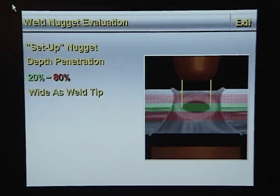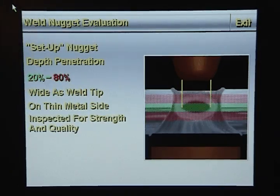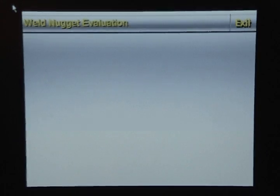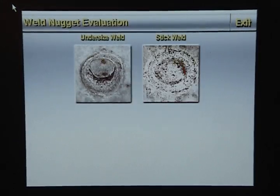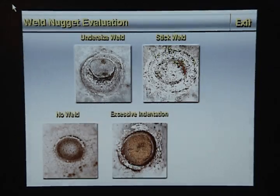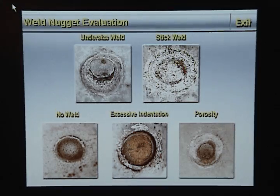A weld nugget's width is characterized as being as wide as the weld tip on the thin metal side. Weld nuggets are inspected for strength and quality. The most common weld nugget problems are an undersized weld, a stick weld, no weld, excessive indentation, and porosity. Click on one of these weld nugget problems for a detailed explanation.